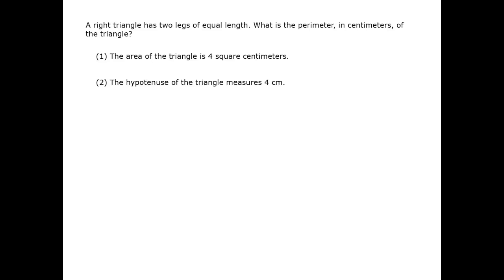In this question, we are dealing with a right triangle that has two sides of equal length. The only way for a right triangle to have two sides of equal length is to be a 45-45-90 triangle.